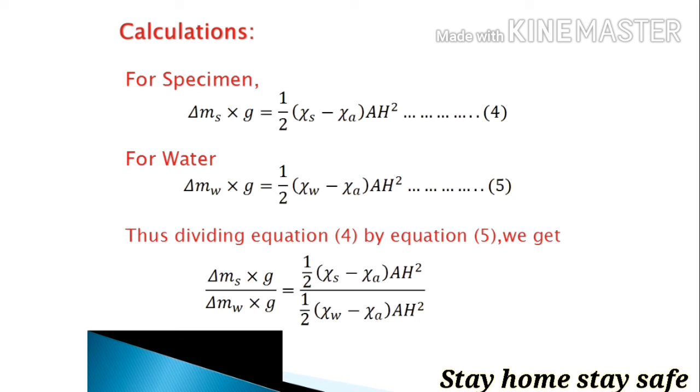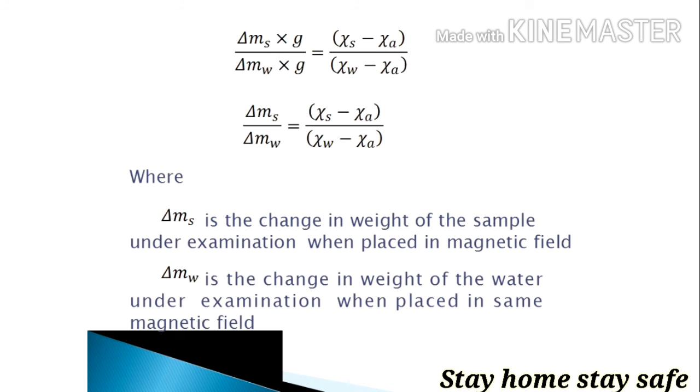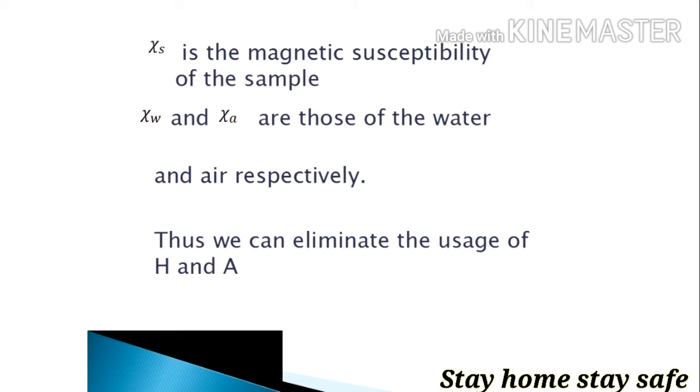If you see this equation, g and AH squared get cancelled, and you can eliminate the use of finding A and H from the experiment. Thus by using this, you can easily calculate the magnetic susceptibility of the atom.